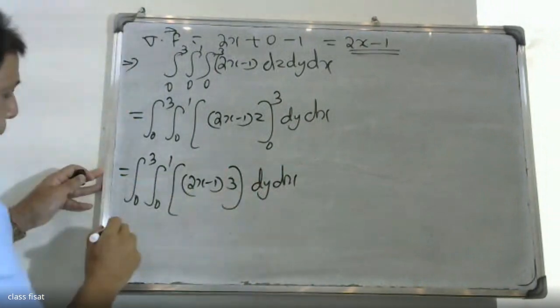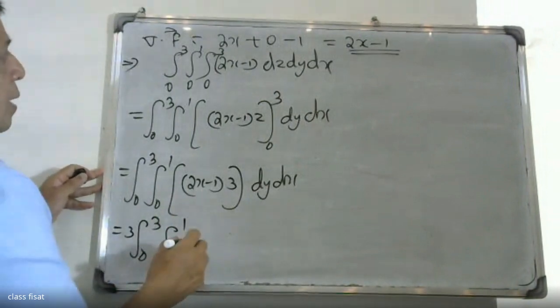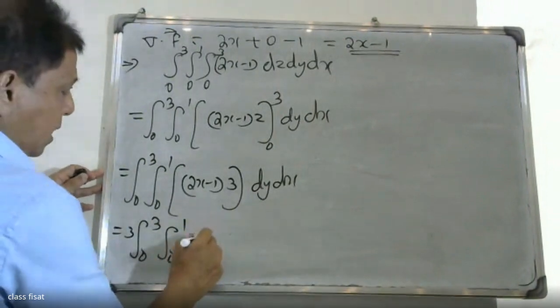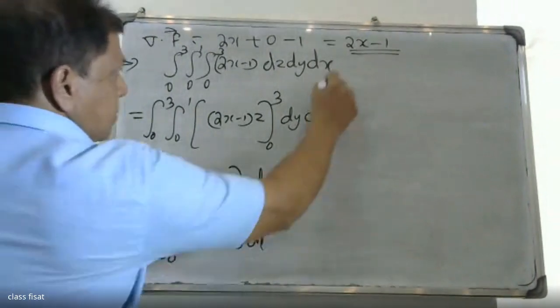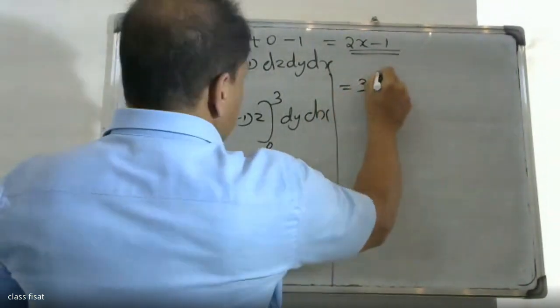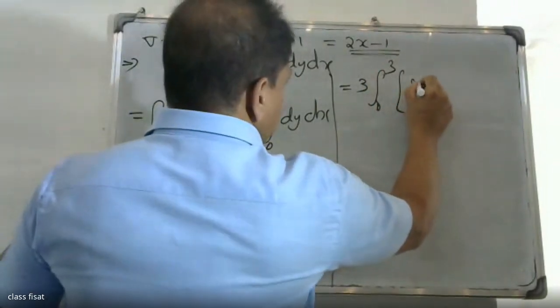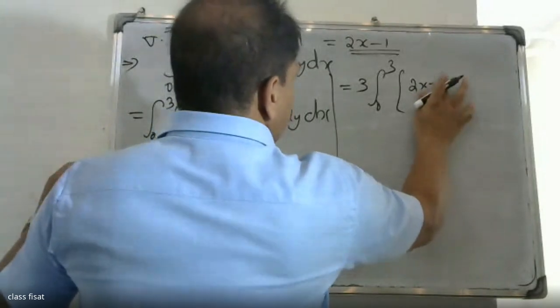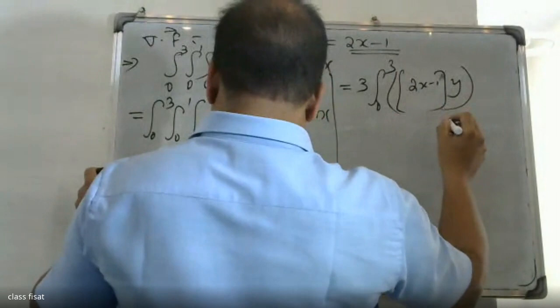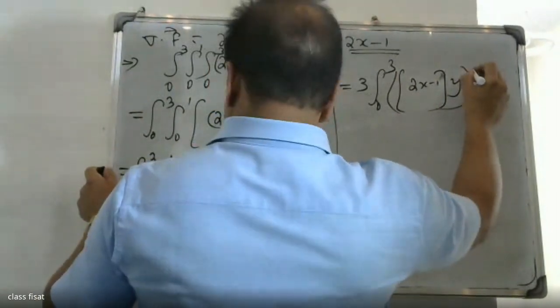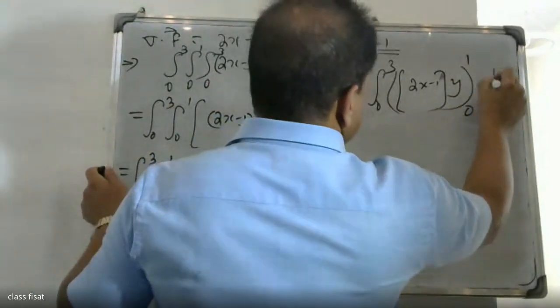That is 3 times integral 0 to 3 of (2x - 1) times y evaluated from 0 to 1, dx. Upper limit is 1, lower limit is 0. So this equals 3 times integral 0 to 3 of (2x - 1) dx.